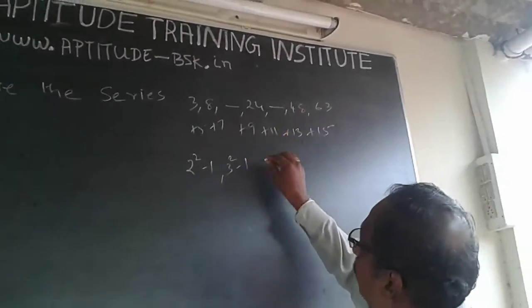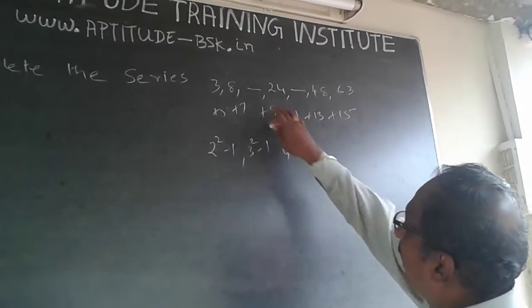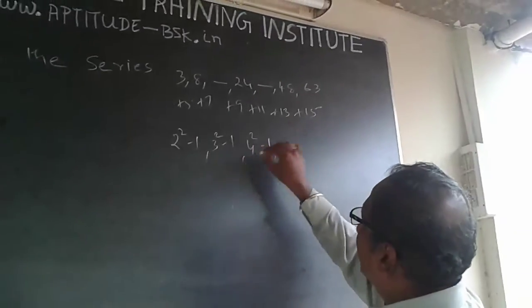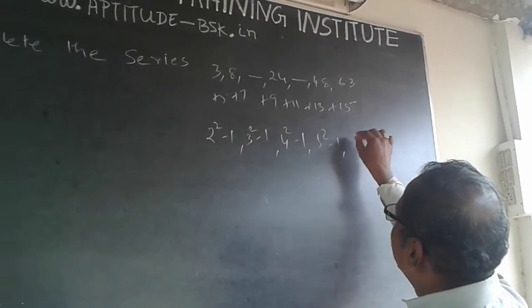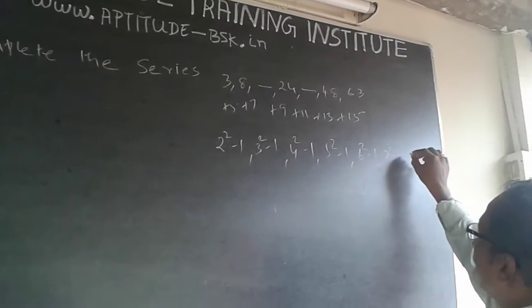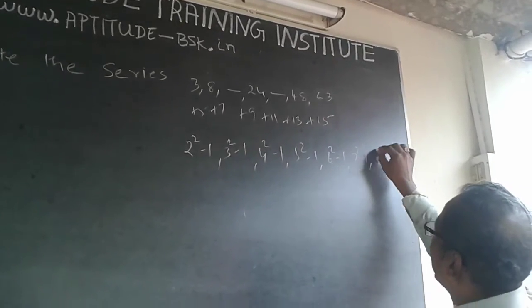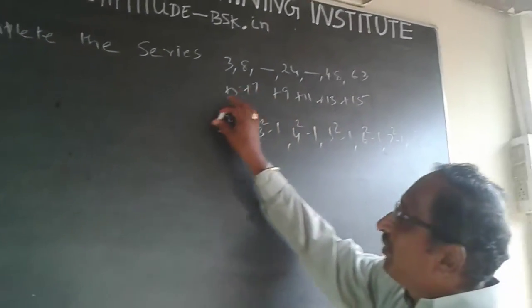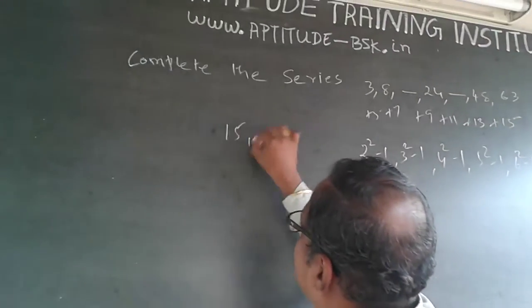This should be 4 square minus 1, which is 15. Then 5 square minus 1, which is matching. Then 6 square minus 1, then 7 square minus 1, and the last one will be 8 square minus 1. The answer is definitely 15 and 35.